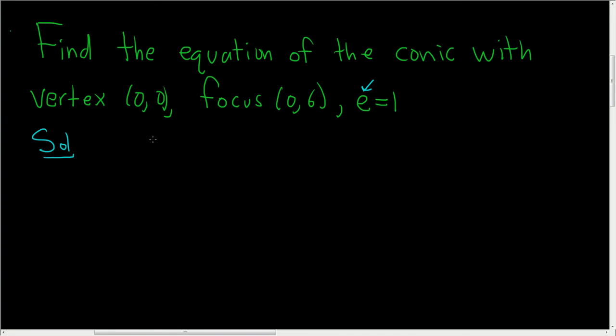Because the eccentricity is equal to 1, we know that we have a parabola, and we know the vertex is (0, 0).